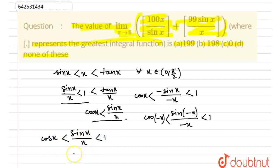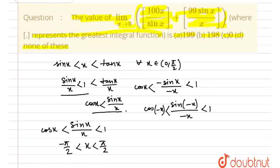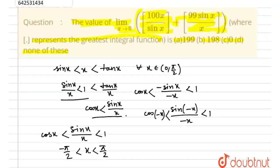That is less than 1 and greater than cosx. That becomes true for all x less than pi by 2 and greater than minus pi by 2. So, sinx by x is less than 1 and greater than cosx. That becomes true for all x less than 90 degree and greater than minus 90. Now, we would be using that.